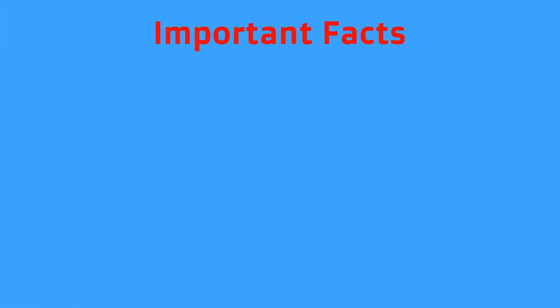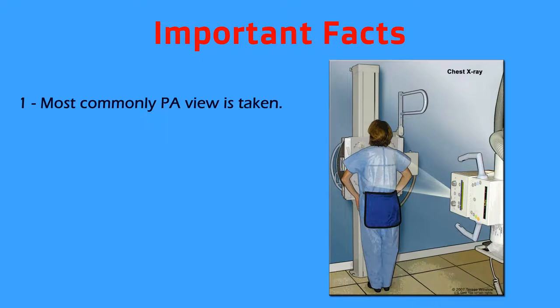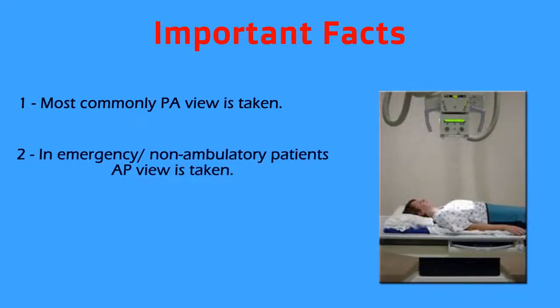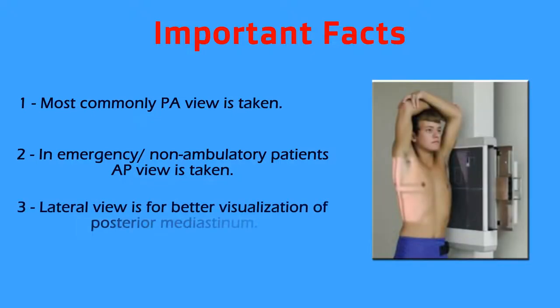There are a few facts that one must remember about the chest x-ray. First, the chest x-ray is usually taken in a PA view or the posterior anterior view, where the rays are travelling from the posterior aspect of the body towards the anterior. This helps in better visualisation of structures closer to the plate anteriorly — that is the mediastinum with the heart, trachea, lungs, diaphragm and the bones. In emergency cases or in non-ambulatory patients, we take the AP view or the anterior posterior view. Other views like the lateral view are taken for better visualisation of the posterior mediastinum.